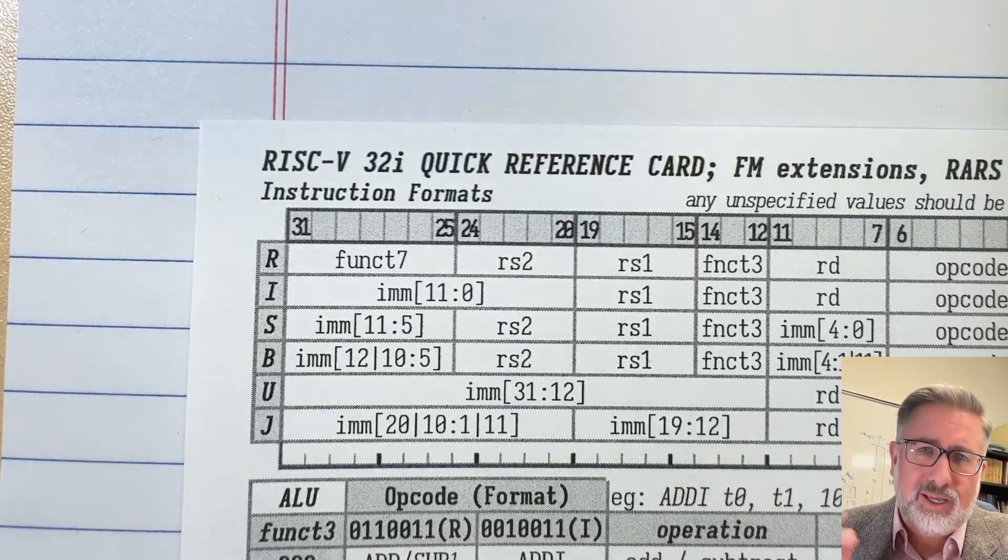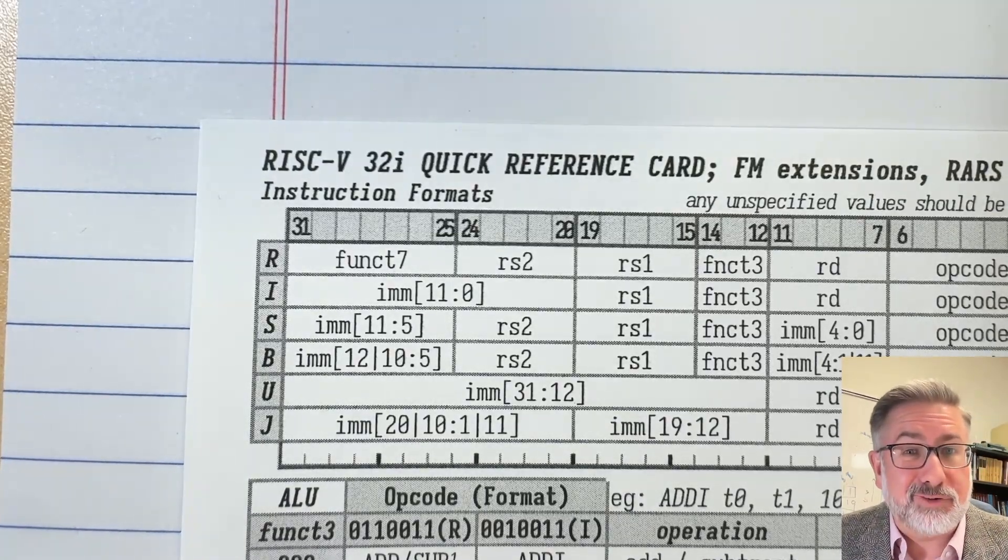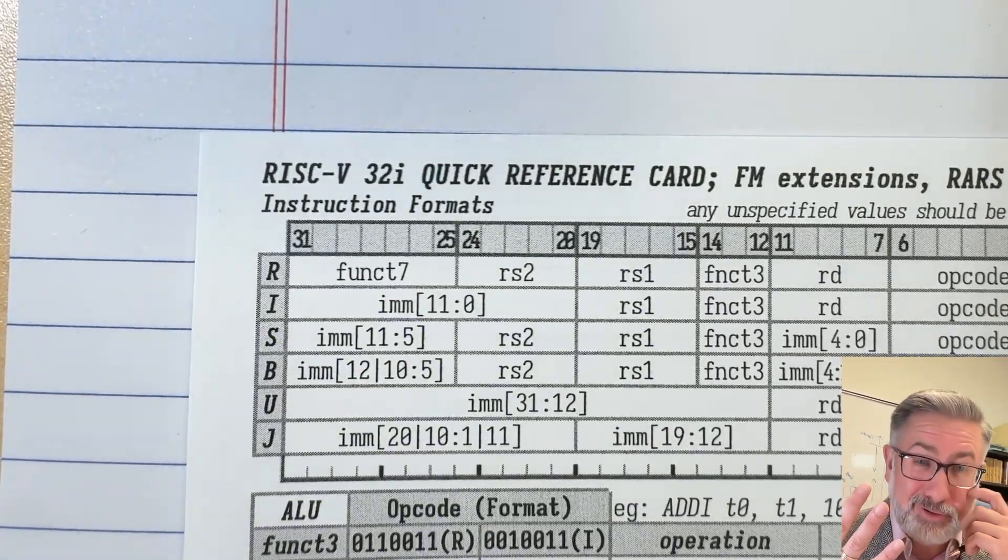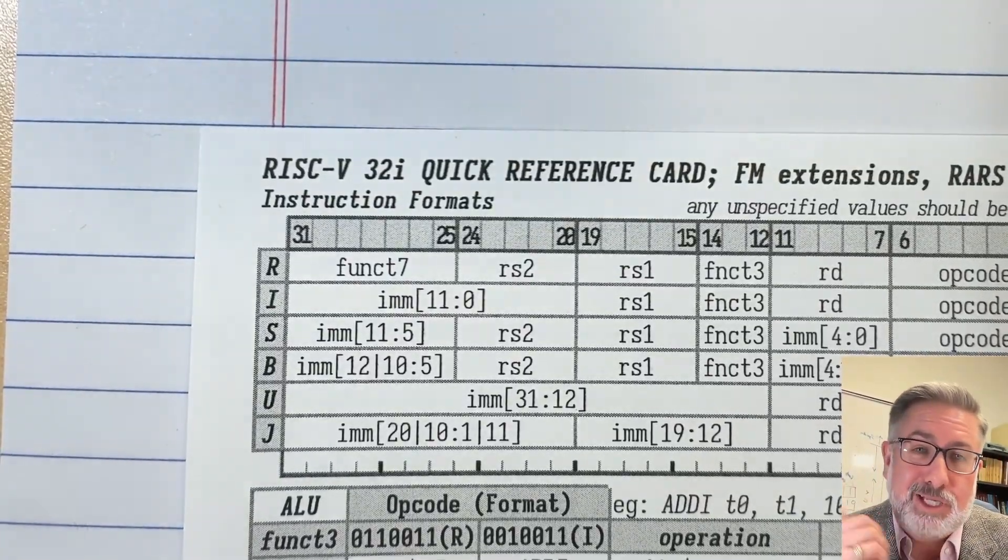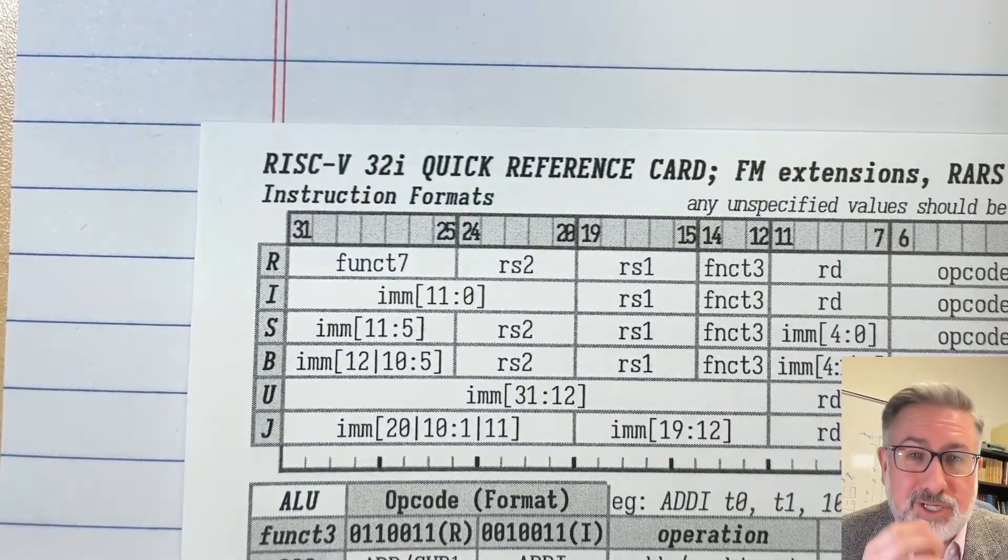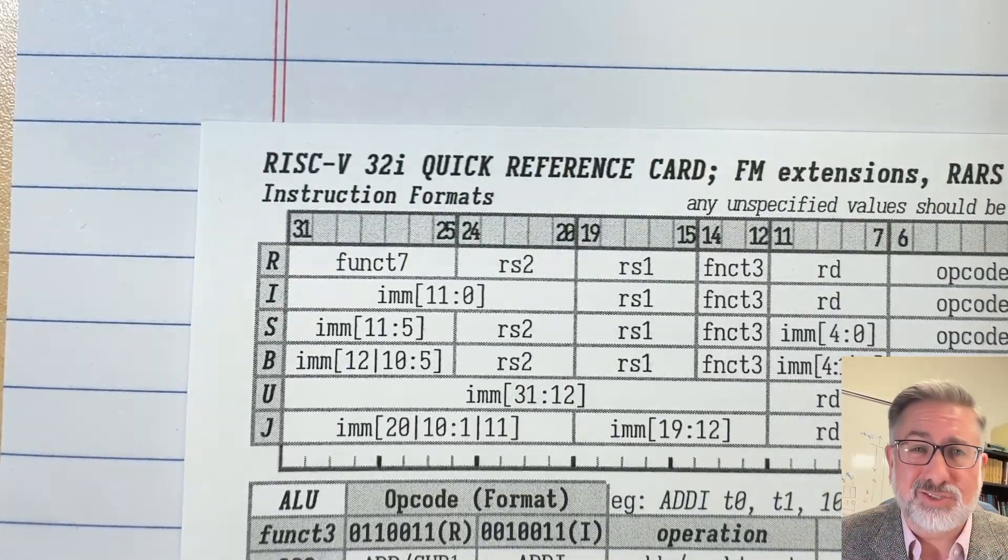But it all has to do the same kind of stuff. There are three fundamental things that an assembly language architecture has to do. It has to be able to do math on numbers - take two numbers, do something to them, and then put the results somewhere. That's basic data processing instructions.